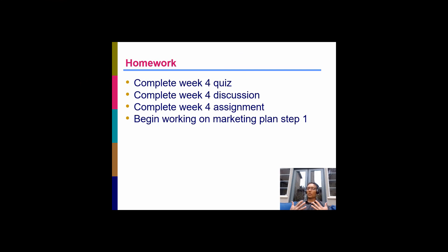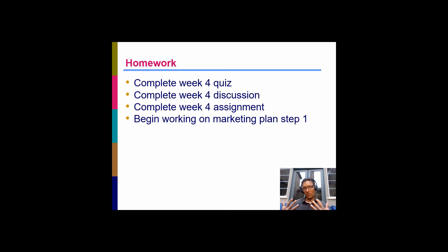In summary, there are three ways we purchase products. For higher-risk or highly involving products, we use a cognitive decision-making process and move through the five steps. At other times, we use a habitual process with shortcuts. And sometimes we use an affective, emotional, irrational process. Marketers can be involved in each of those processes, and we want to understand which type of decision process our consumer will go through and how we can influence those decisions accordingly. Thanks for listening — good luck with the homework!